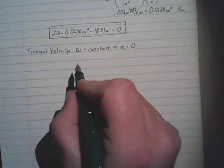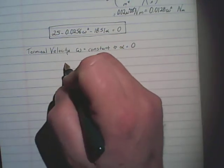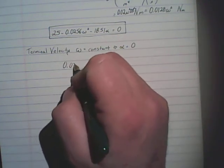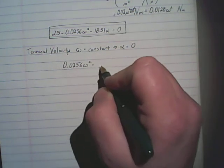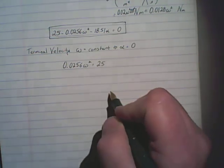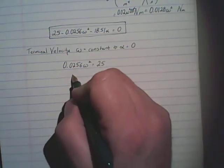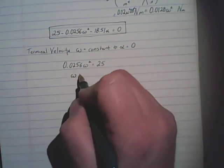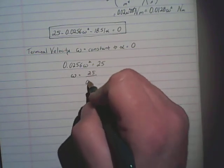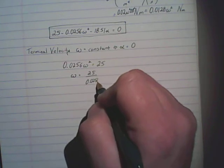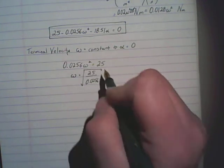So, rearranging things a little bit, what that gives us is 0.0256 omega squared is equal to 25. Solving for that, we get that omega is equal to 25 over 0.0256 and take the square root.